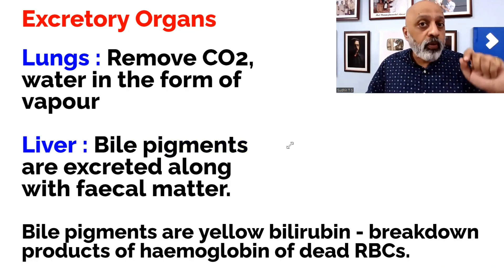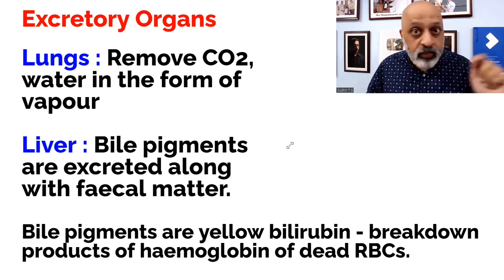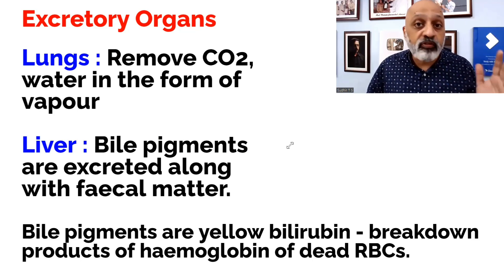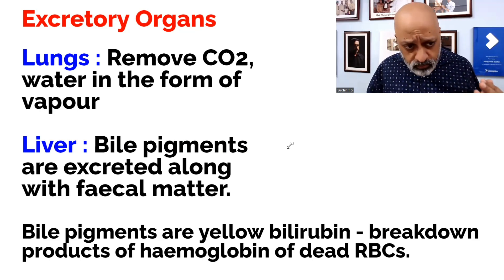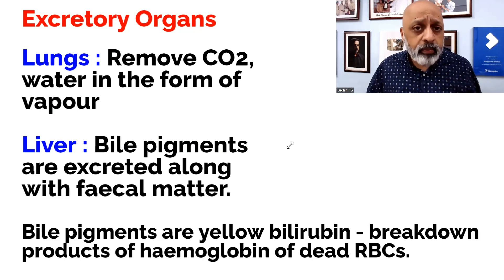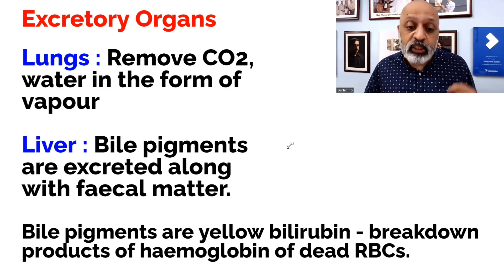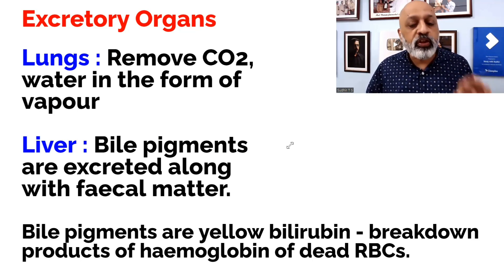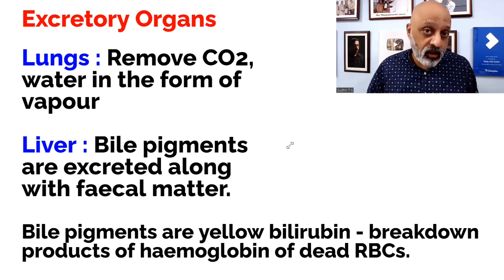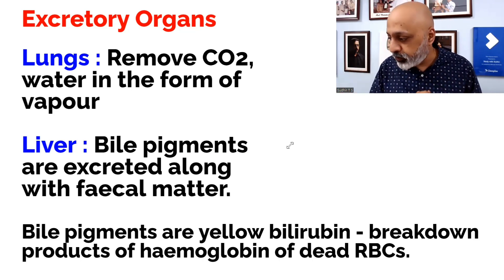Talking specifically about the excretory organs: first, the lungs remove carbon dioxide and water in the form of vapor. Then the second one is the liver — the bile pigments are excreted along with fecal matter. What are bile pigments? Bile pigments are chiefly yellow bilirubin. They are the breakdown products of hemoglobin from dead red blood cells (RBCs). So from those, yellow bilirubin is formed. Those are the main bile pigments.